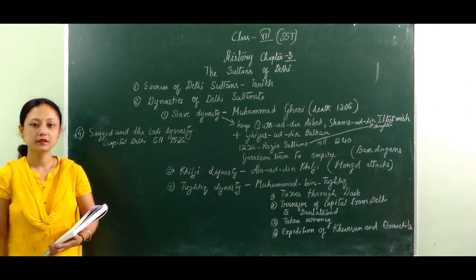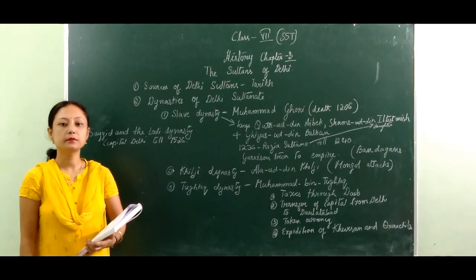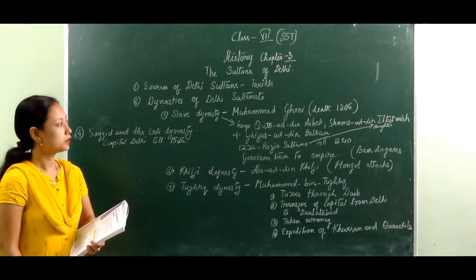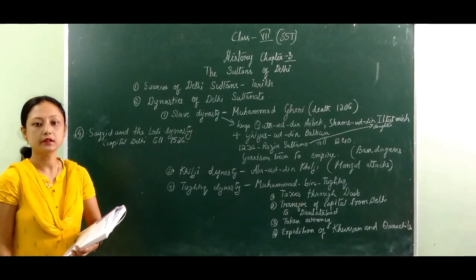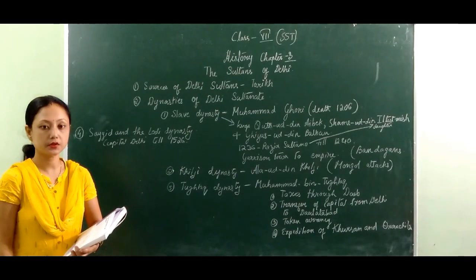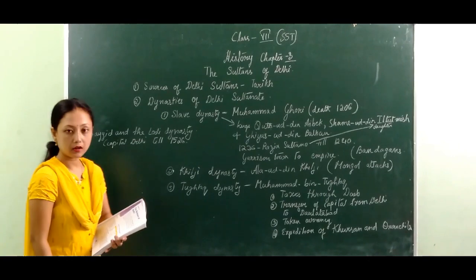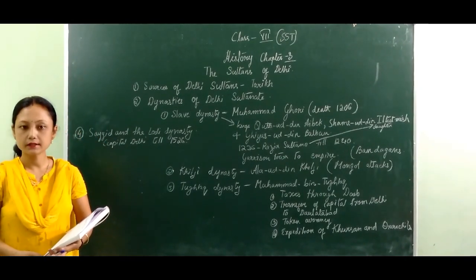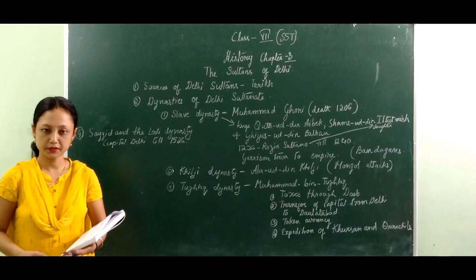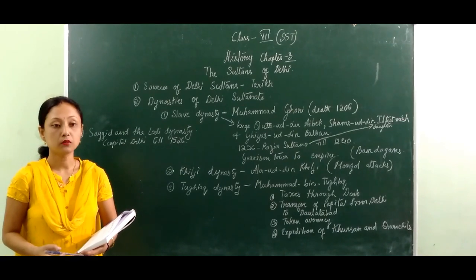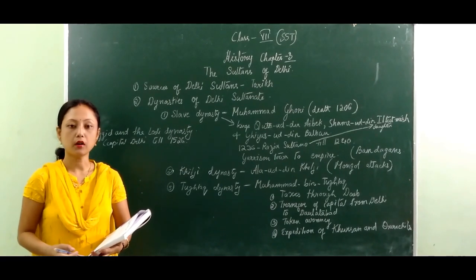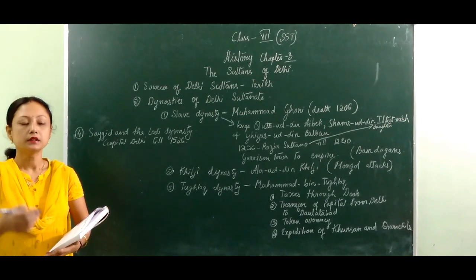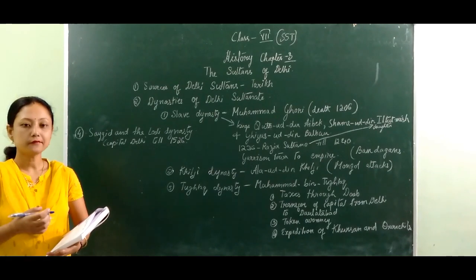Good morning children. Today we will be studying from Class 7 Social Studies. We will be dealing with the history portion from Chapter 3, that is the Sultans of Delhi. We find that Delhi is a very important capital city of India. Here is a history about who ruled Delhi from medieval India till today.